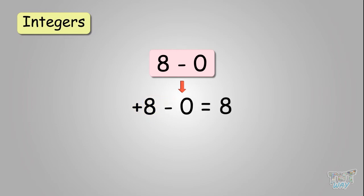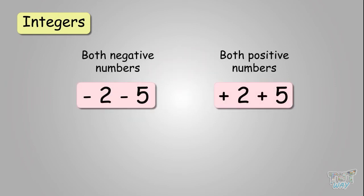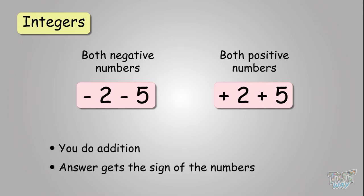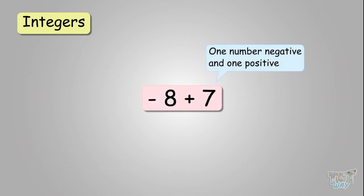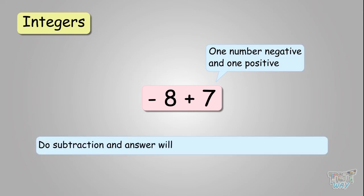So this is how you can do your sums very easily without the number line. Remember: if you have two similar signs — both minus minus or plus plus — you add, and the answer will get the sign of the numbers. If the signs were different — a negative and a positive — you subtract, and the answer will get the sign of the bigger number.